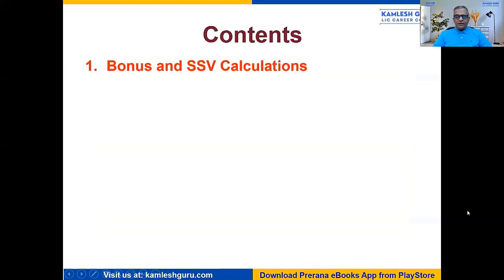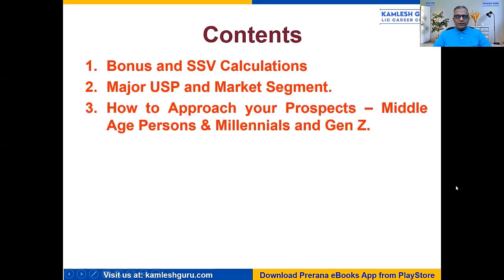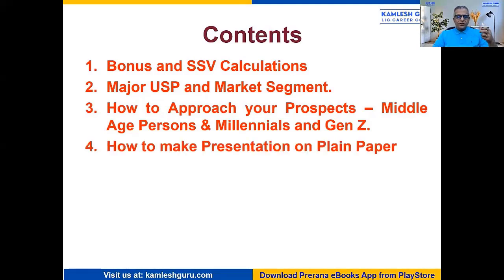Now, it contains 8 modules. Jeevan Omang is exclusive. You will get complete mastery over the Jeevan Omang plan — that is, bonus and SSV calculations, the major problems you have, what is the major USP and market segment you should sell, how to approach the prospects — the middle age persons, millennials and Gen Z — and what different concepts you can use to approach them to convince about their insurance needs.